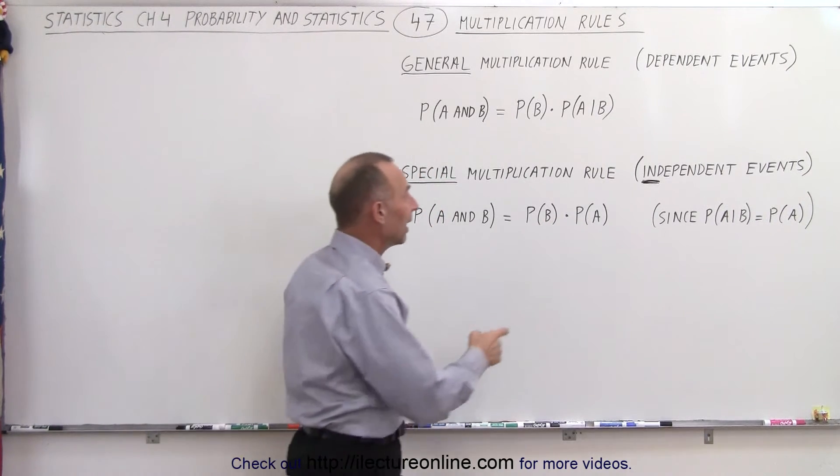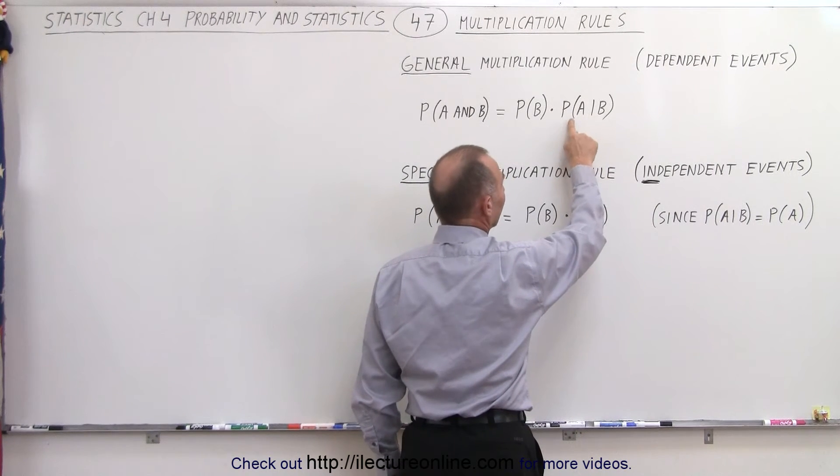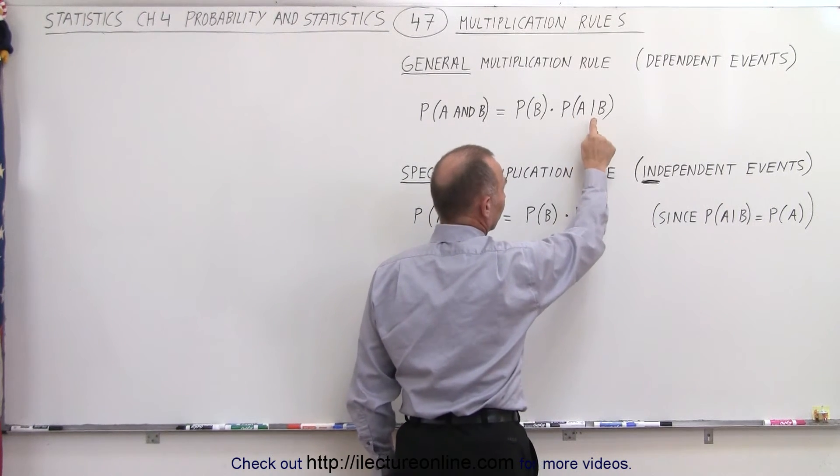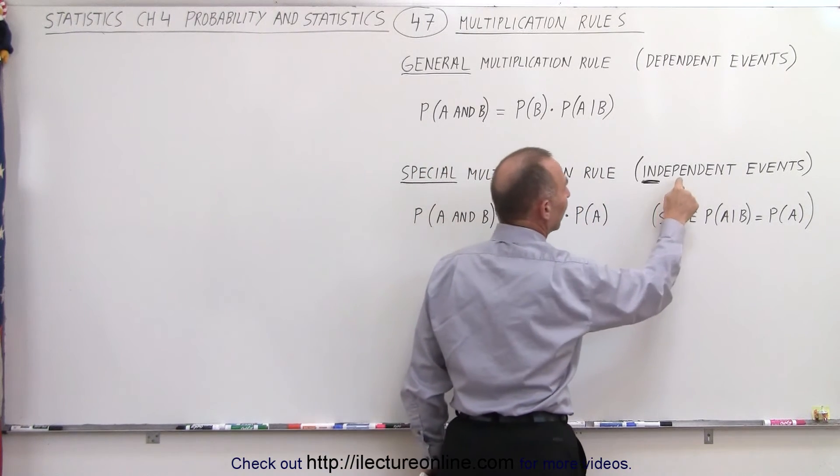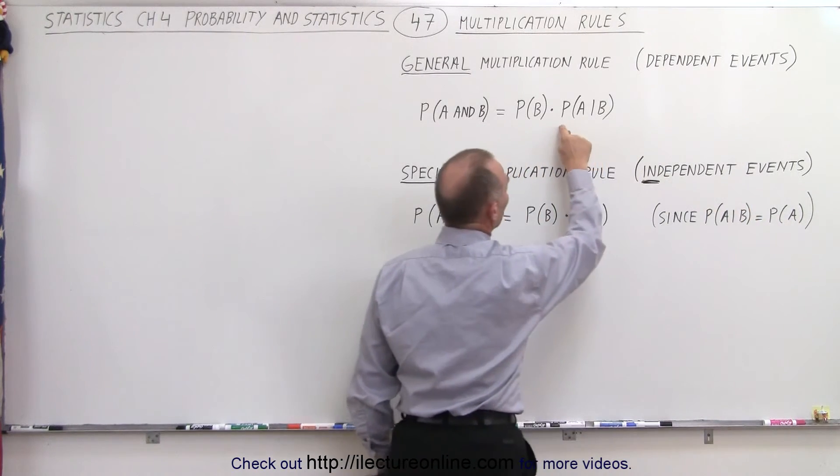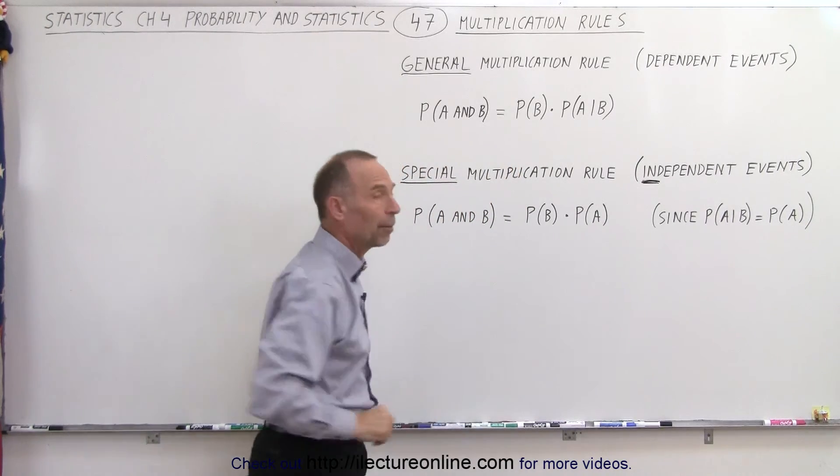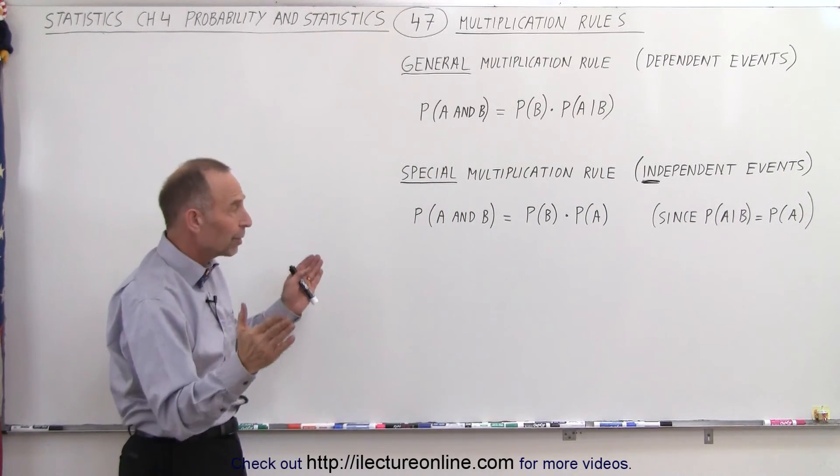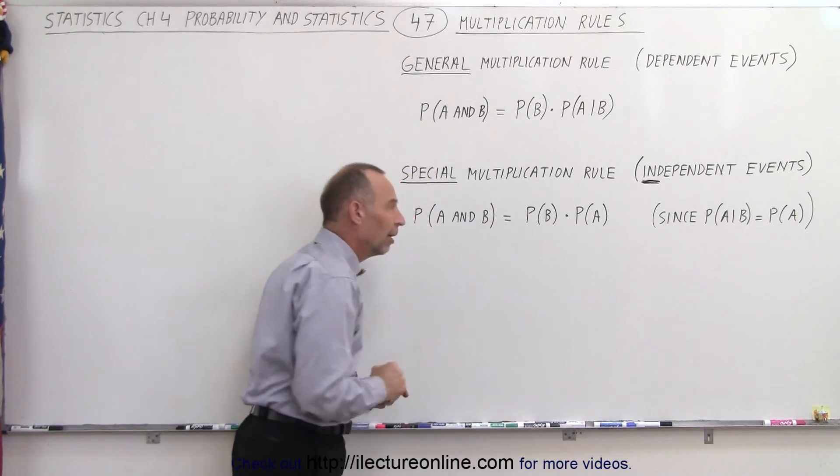You can see that for independent events, the probability that A will occur given that B has occurred is equal to the probability of A. Since P(A|B) equals P(A) in the case of independent events, we can replace it, and then we see that the probability of A and B is simply the product of the probability of A and the probability of B.